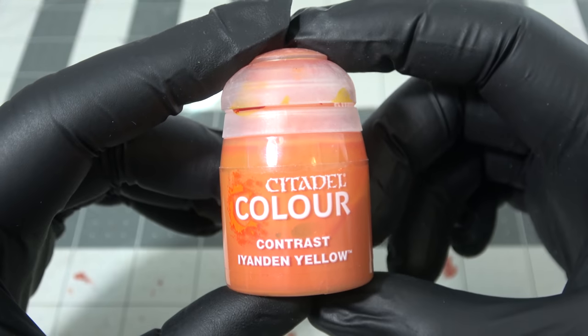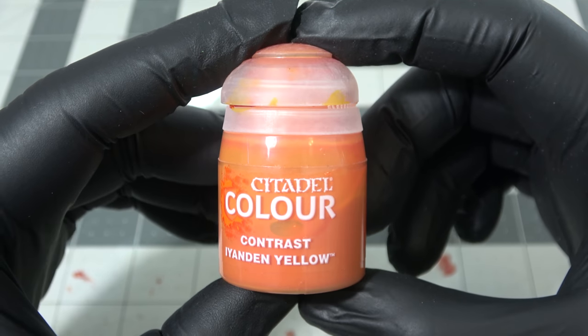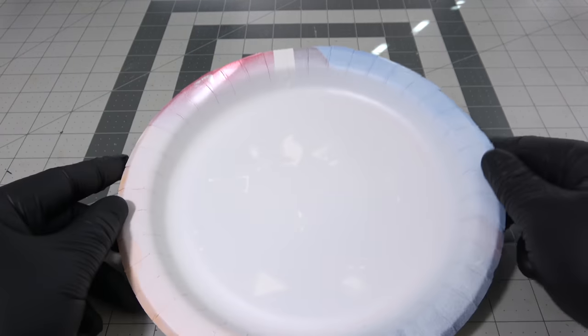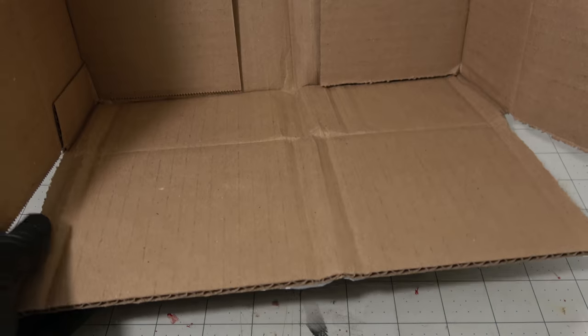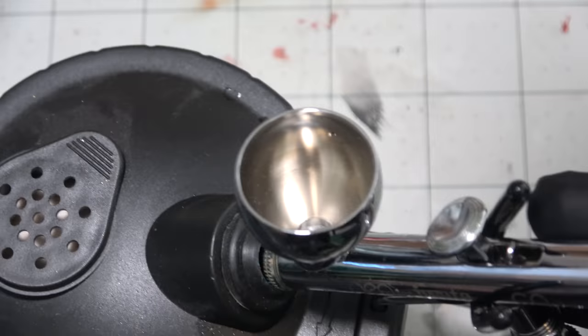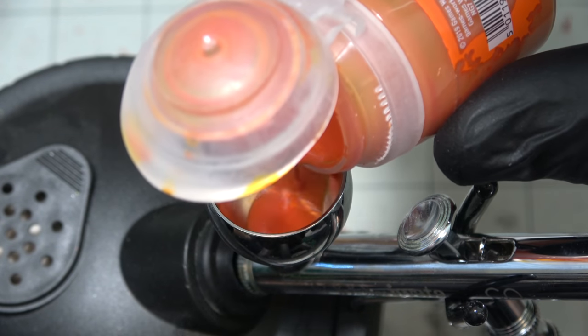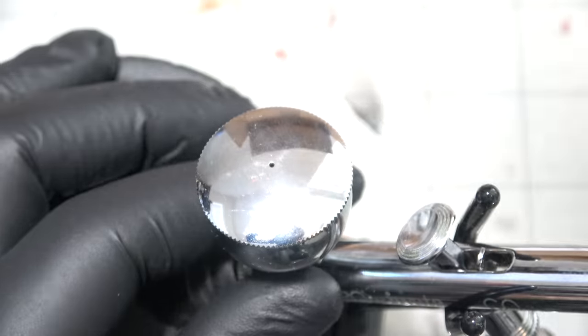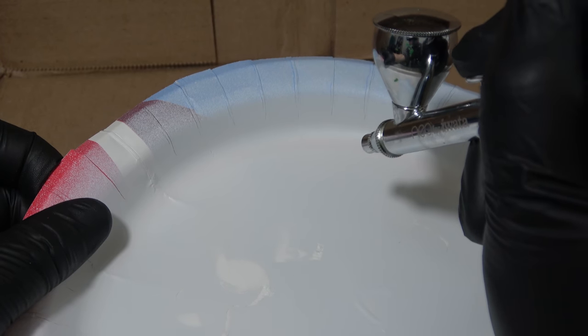As I set up the air compressor and the airbrush, I'm going to use my contrast Iyanden yellow, just like I used in the tabletop ready miniature video because it makes a nice gradient from yellow to an orangish red and then I can just layer red on top of it. I set up all of my stuff that I need for the airbrush, including a backing out of cardboard and put way too much paint inside of my airbrush, but that's not the problem.